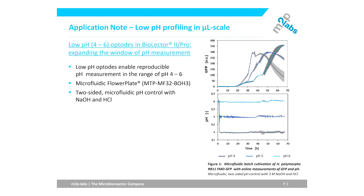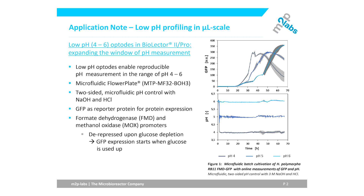For that, we used the microfluidic MTP of type B or H3 to facilitate not only measurement, but also two-sided microfluidic pH control with NaOH and HCl. GFP was used as a fluorescent reporter protein under the control of either the FMD or MOX promoter.